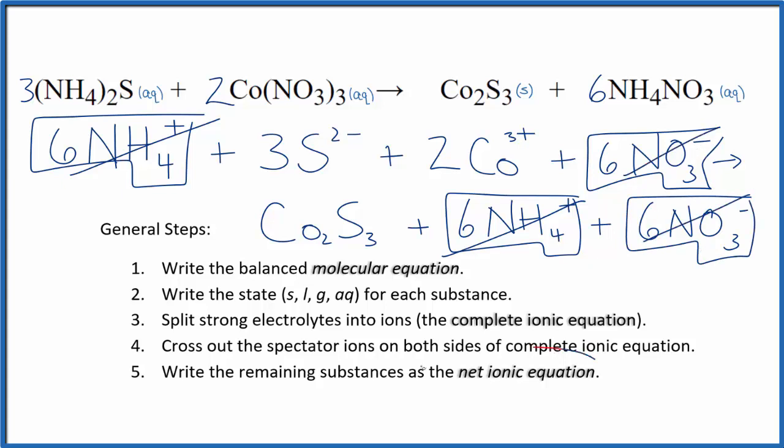What's left is the net ionic equation for ammonium sulfide plus cobalt(III) nitrate. I'll clean this up and write the states. We'll have our net ionic equation.